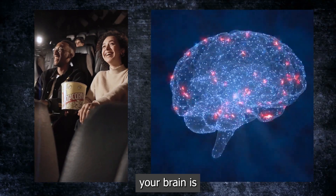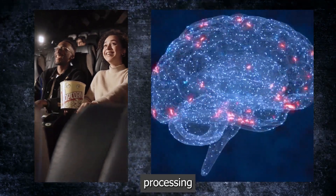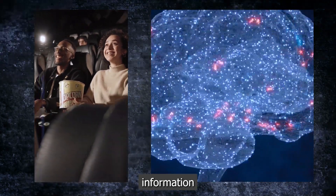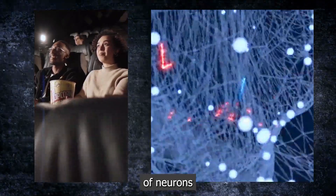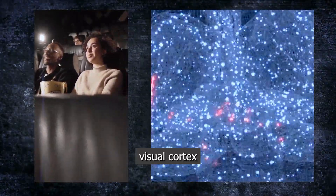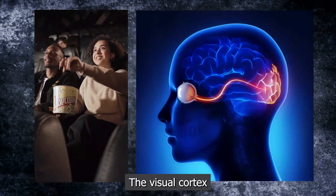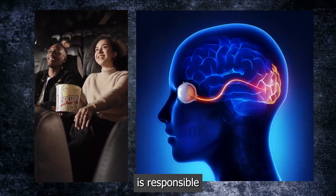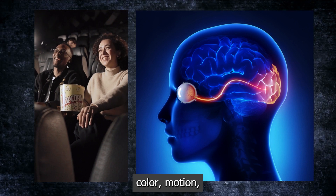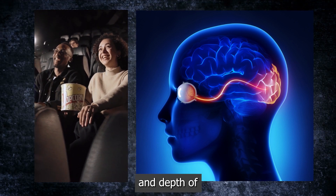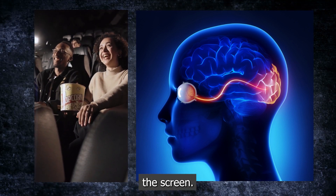When you watch a movie, your brain is constantly processing the visual information that reaches your eyes. This information is processed by millions of neurons in different regions of your brain, especially in the visual cortex, which is located at the back of your head. The visual cortex is responsible for analyzing the shape, color, motion and depth of the objects you see on the screen.